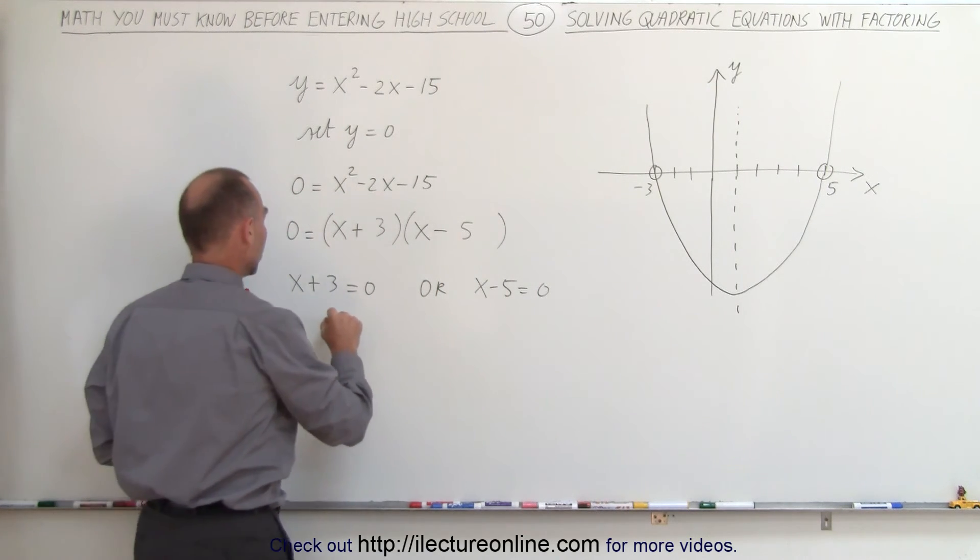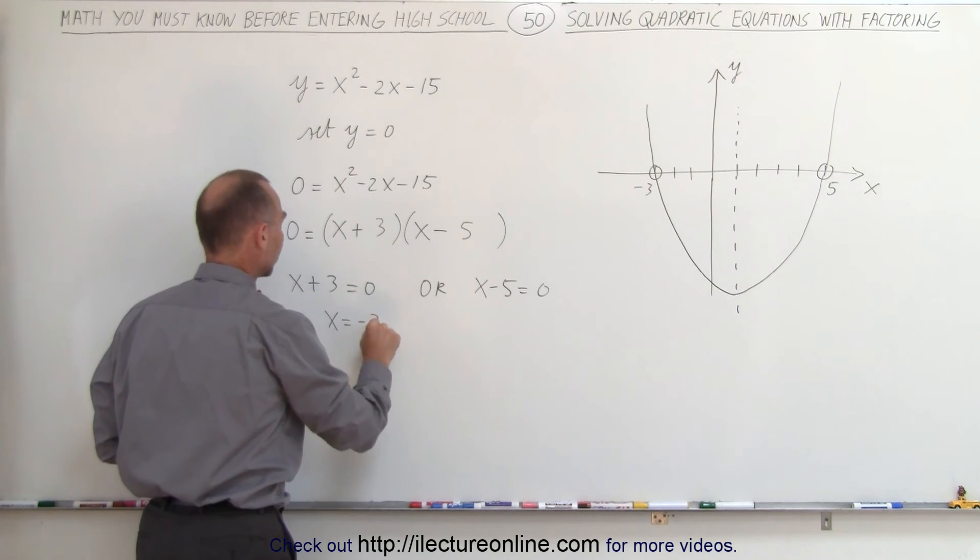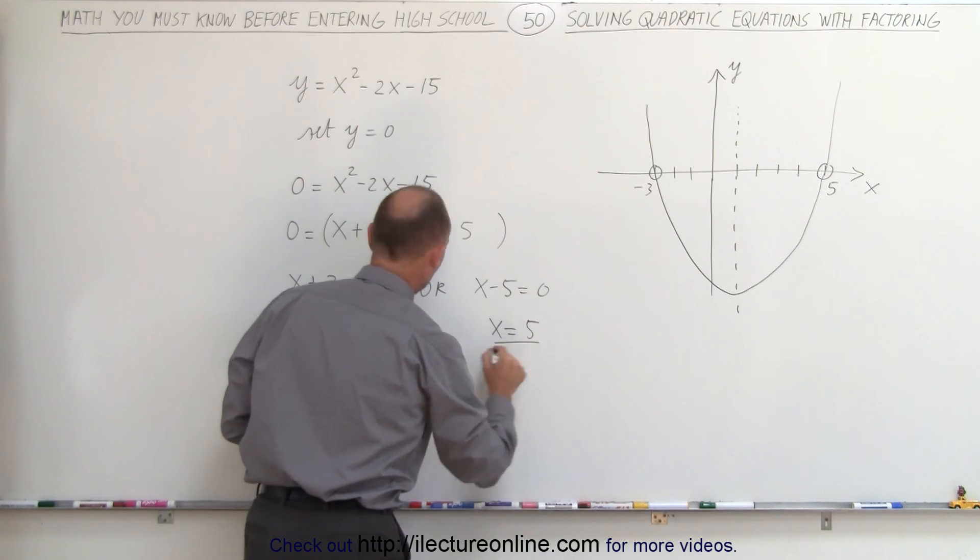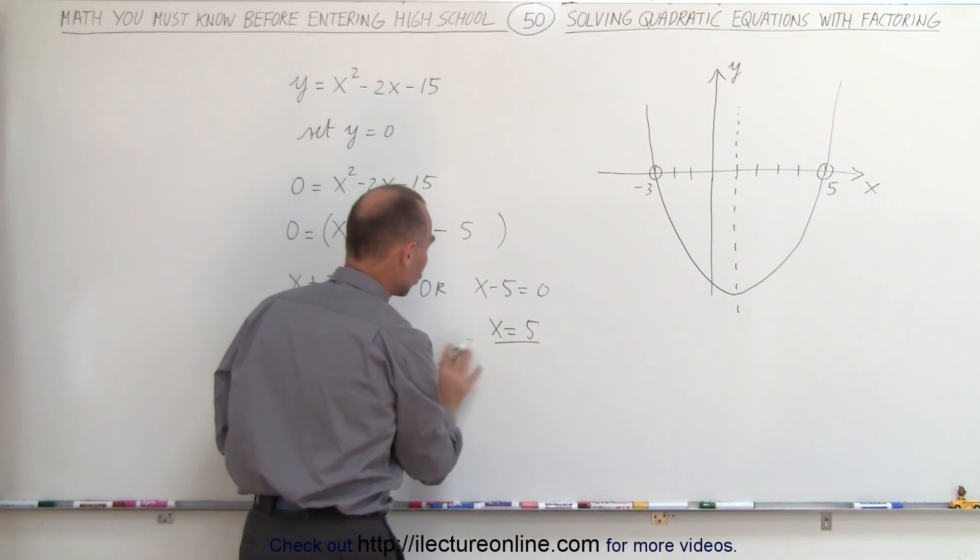Well, if the first case is true, we get x equals minus 3. If the second case is true, we get x equals 5, and those happen to be the two solutions to the quadratic equation.